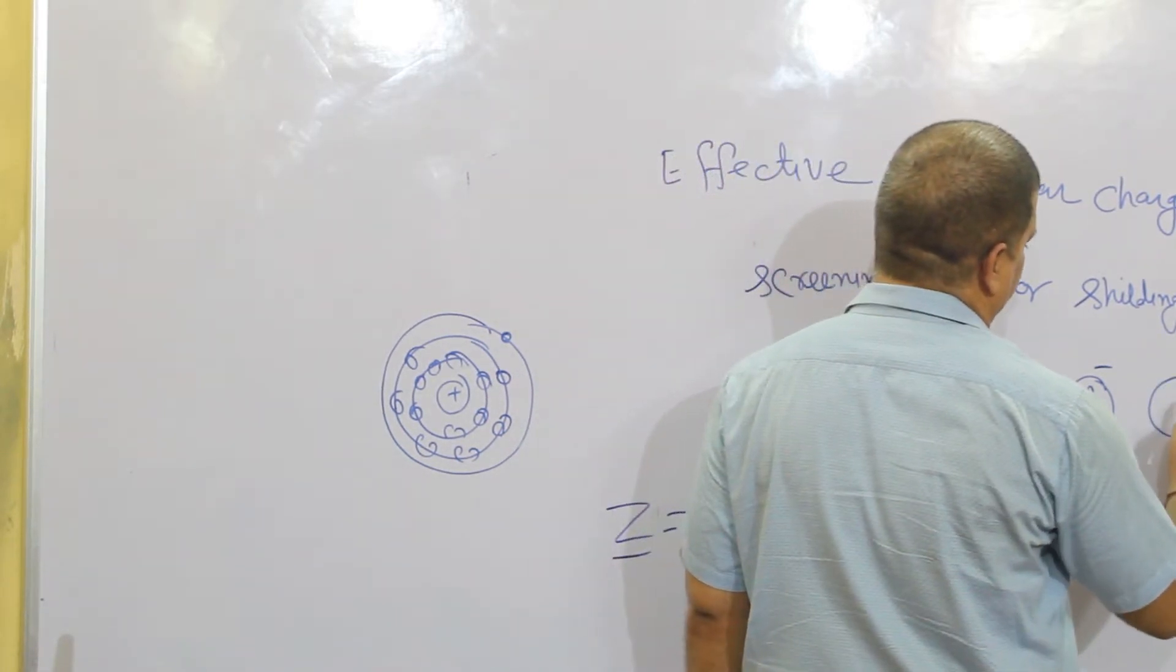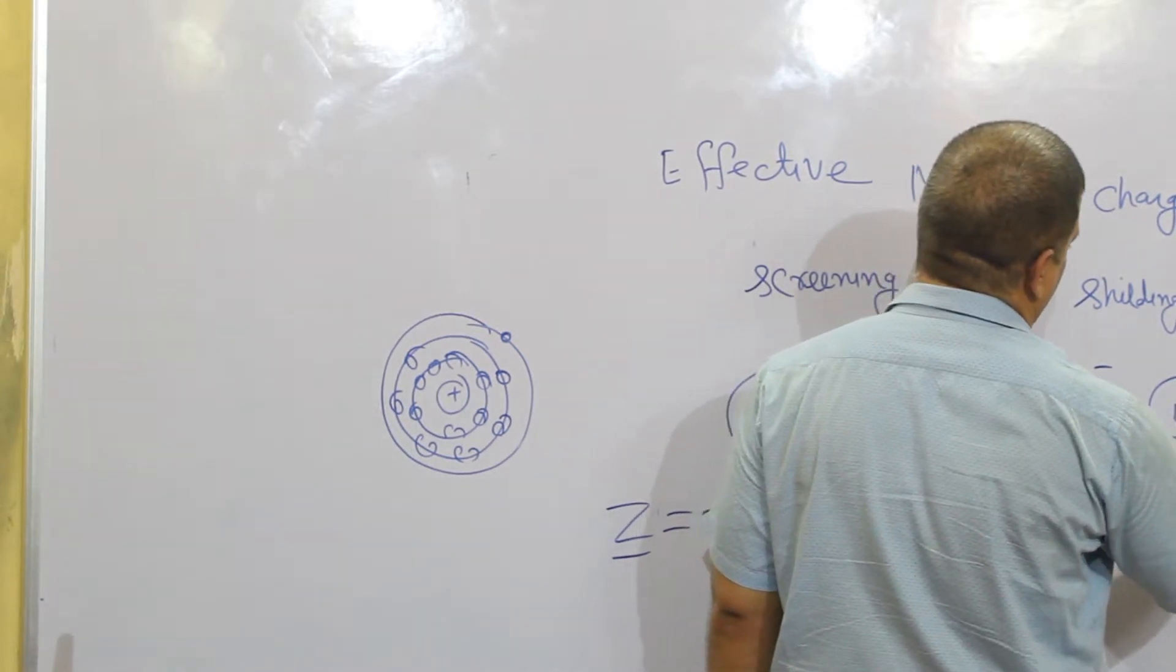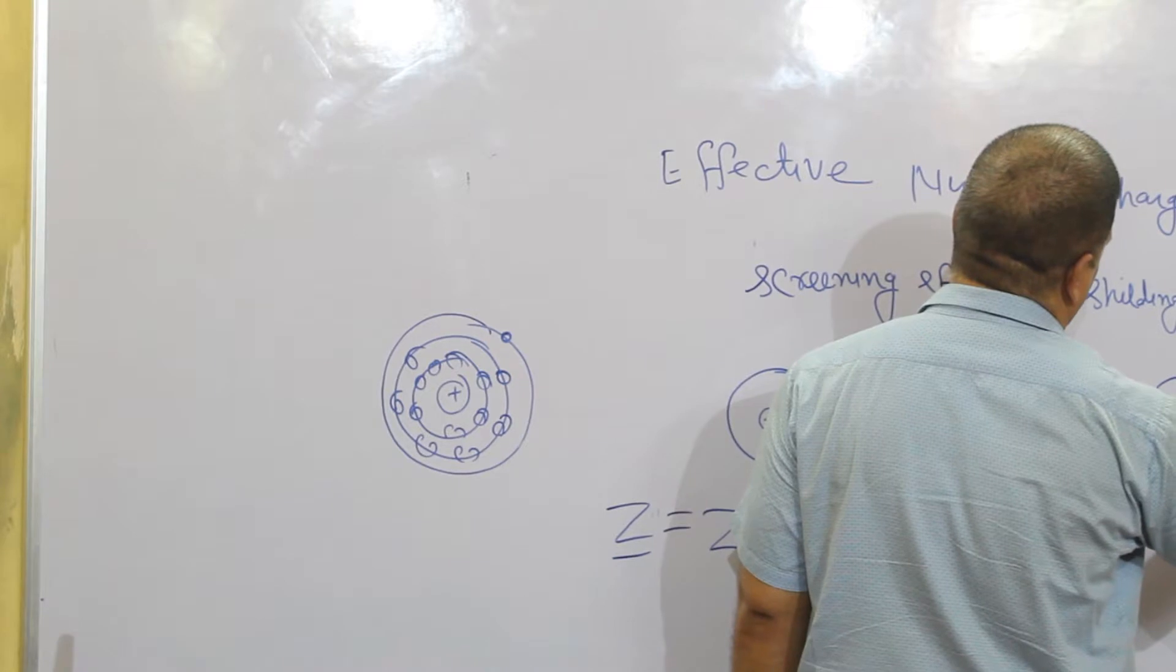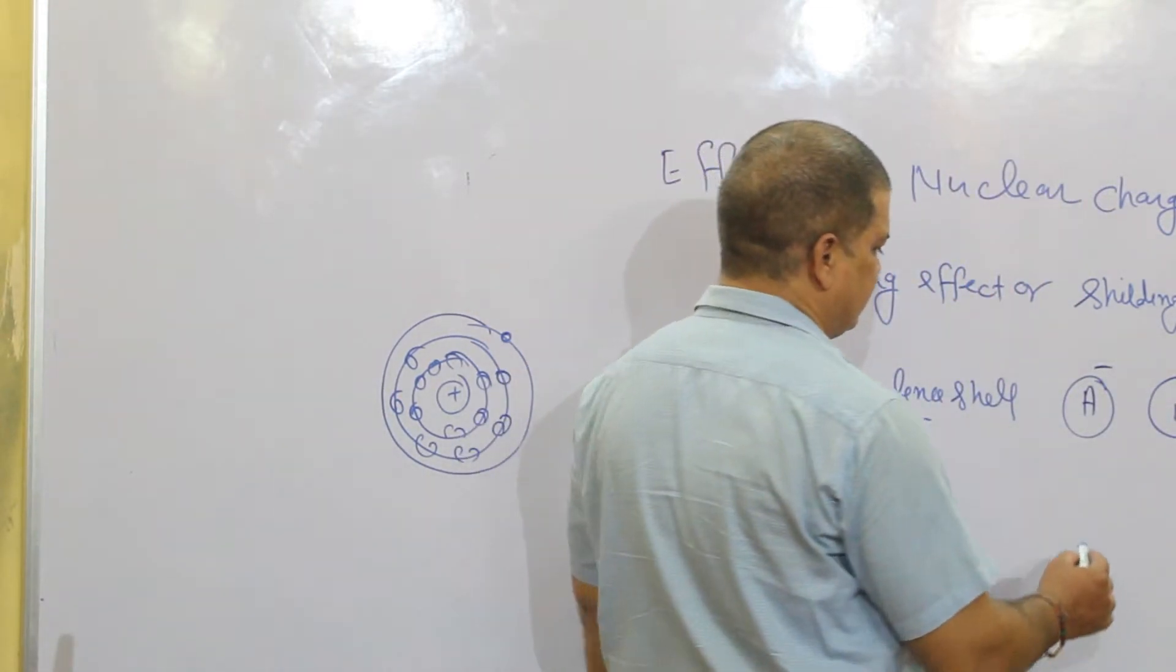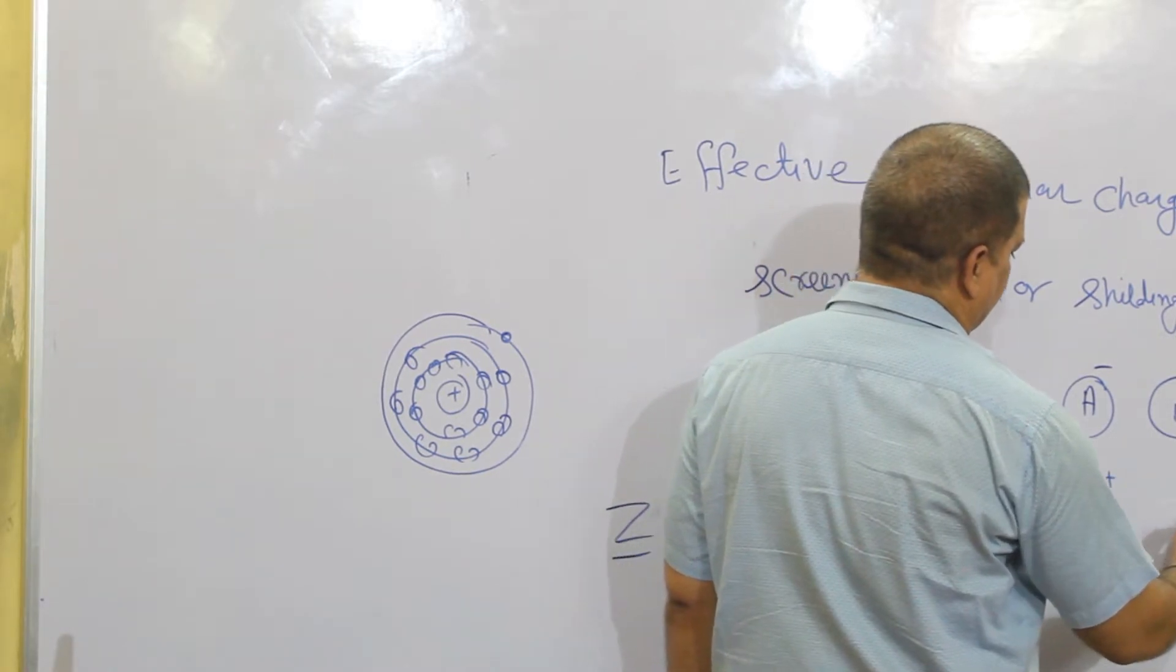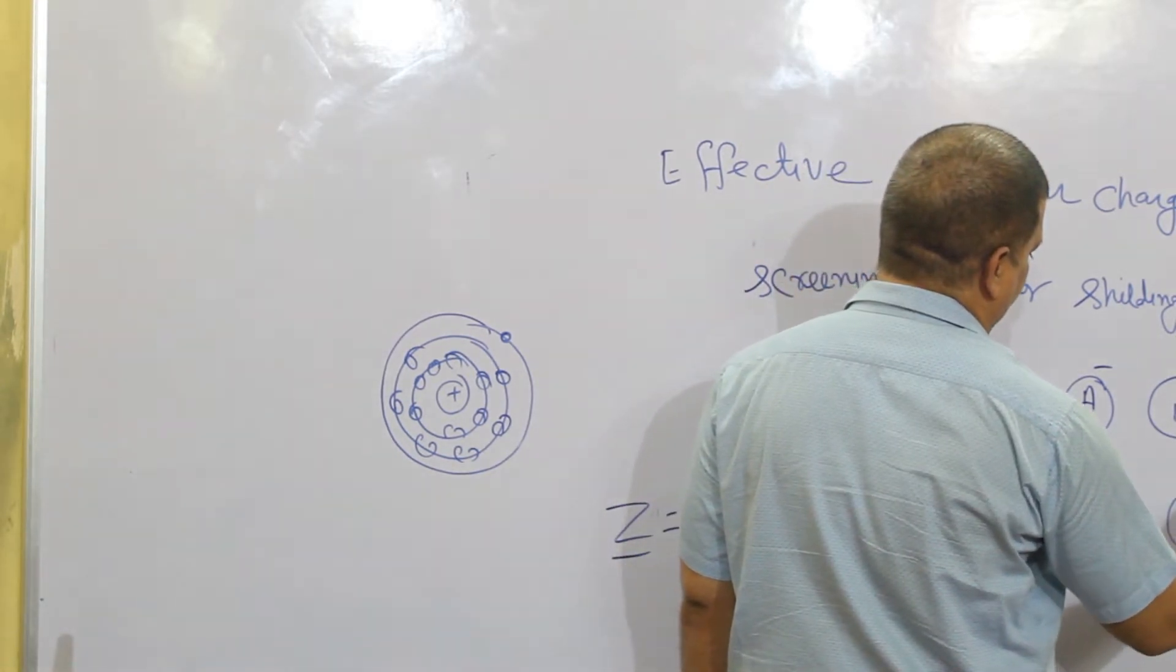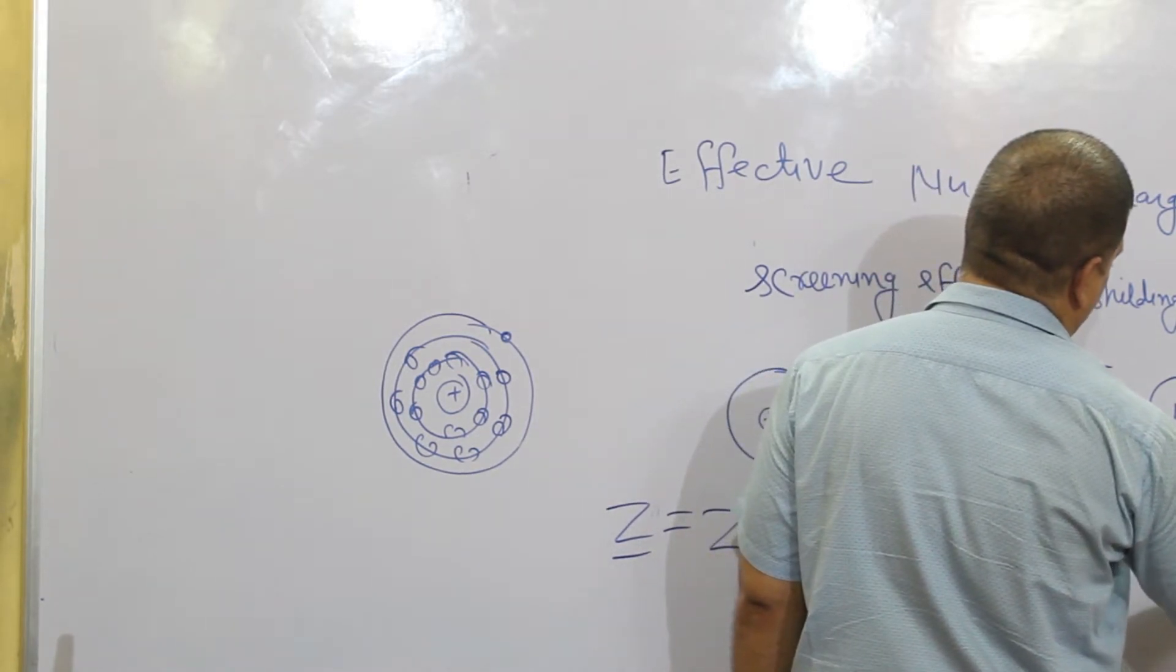If we write A is 1 negative, B is 2 negative, C is 3 negative. For cations, X is 1 positive, Y is 2 positive.